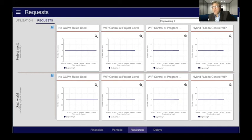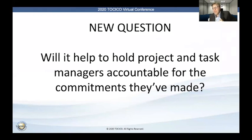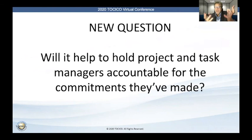You can also see the request backlog. If I'm interested, while the model is running, I can see if a specific resource ever became a bottleneck — was there at any point a substantial backlog of requests waiting for them? I can see here for Engineering Type 1 resources, there was never any backlog — so we probably have too many of those resources, and we could take some away and rerun the model to see if it impacts performance. But for Engineering Manager 2, there are substantial backlogs that can happen.